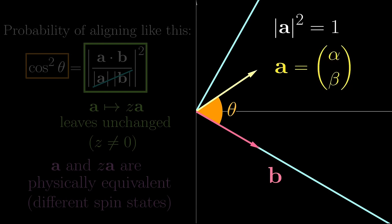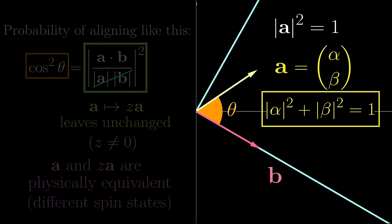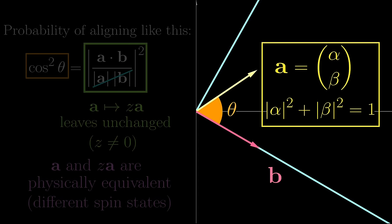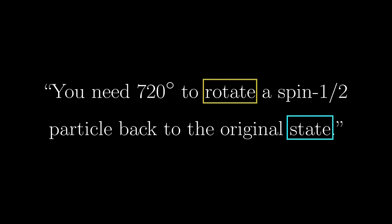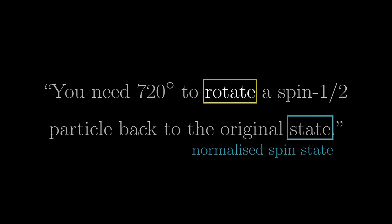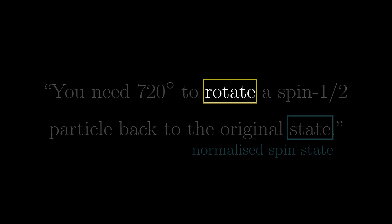If we have the spin state (alpha, beta), the length squared of a complex vector is the sum of the modulus squared, so we have this normalization condition. Let's call all spin states satisfying this the normalized spin states, and we are going to focus on them. So in the original sentence, we now know that the word 'state' means normalized spin state, but we still need the meaning of the word 'rotate.' What does that really mean?